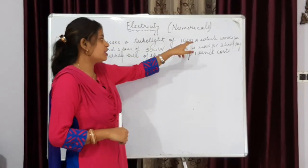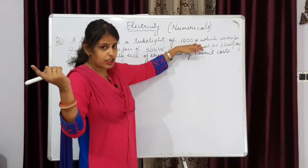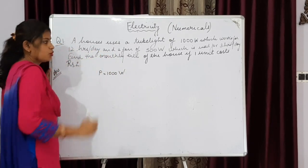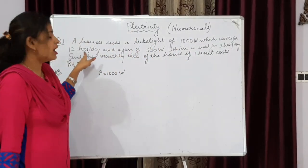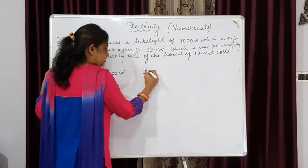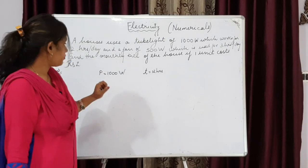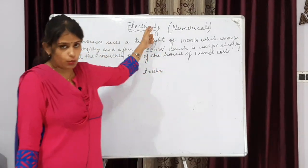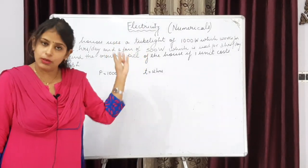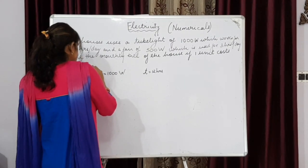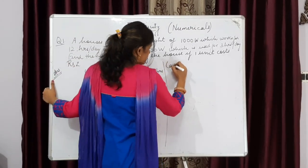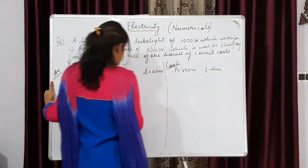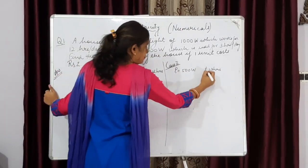A house uses a tube light of 1000 watt — one thing should strike in our mind that it's watt, it means power is given — so write it: power given is 1000 watt, which works for 12 hours per day. Corresponding time is given, that is time is 12 hours per day. And a fan of 500 watt which is used for 3 hours per day. So it's better to make two different cases: Case 1 for tube light, power P1 = 1000W, t1 = 12hr; Case 2: P2 = 500W, t2 = 3hr.